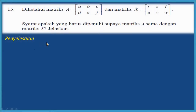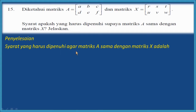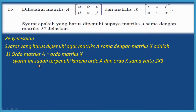Langsung saja. Penyelesaian. Syarat yang harus dipenuhi agar matriks A sama dengan matriks X adalah: 1. Ordo matriks A sama dengan ordo matriks X. Syarat ini sudah dipenuhi karena ordo A dan ordo X sama, yaitu 2 x 3, memiliki 2 baris dan 3 kolom.